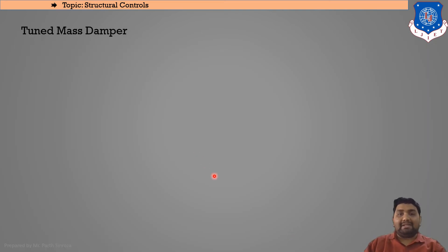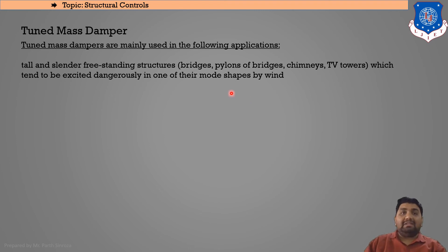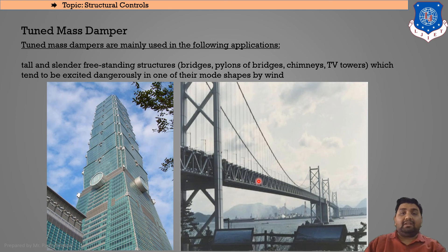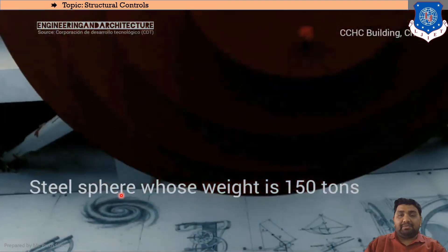Finally, Tuned Mass Dampers (TMDs) are used for tall and slender free-standing structures such as bridges, pylons, chimneys, and TV towers that are excited dangerously by wind or earthquake in one of their modes. The most notable implementation is in Taipei 101 in Chinese Taipei, a well-renowned structure. We'll look at a video explaining how TMDs function.